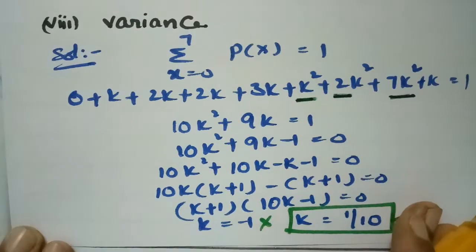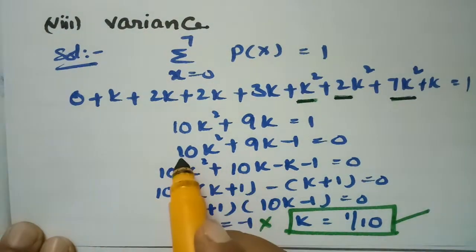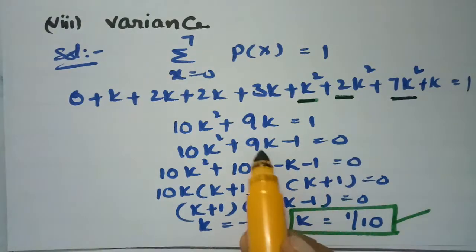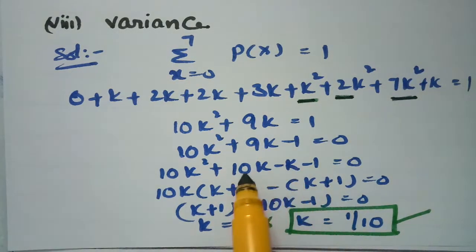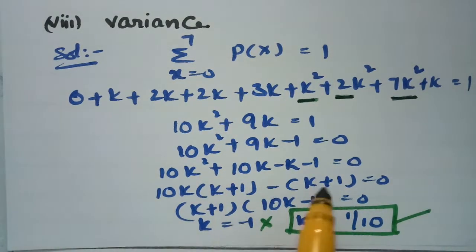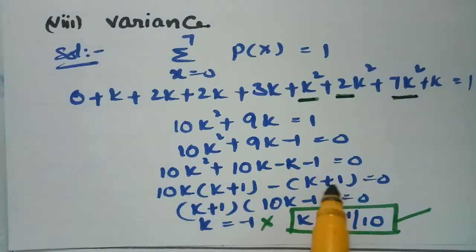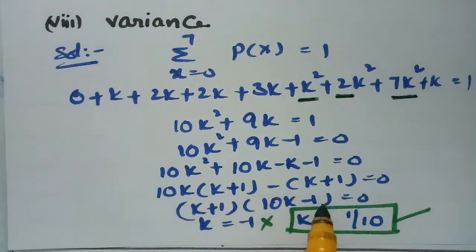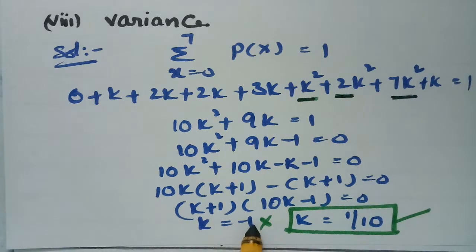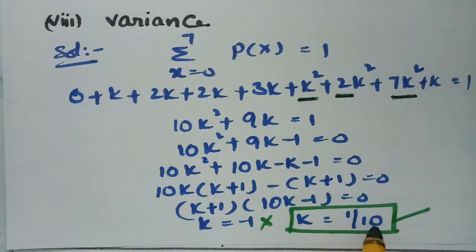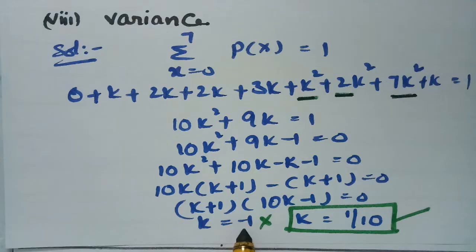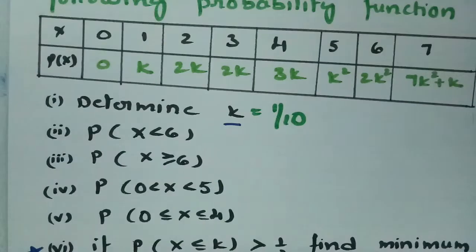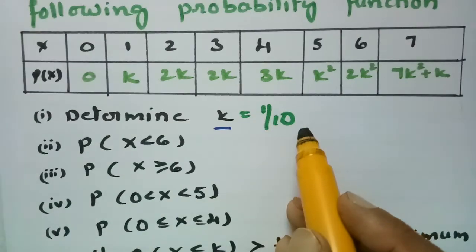Bringing 1 to the left side gives 10k² + 9k − 1 = 0. For 9k, I write it as 10k − k, so after factoring we get (k + 1)(10k − 1) = 0. Therefore k = −1 or k = 1/10. The negative value is not considered, so k = 1/10.